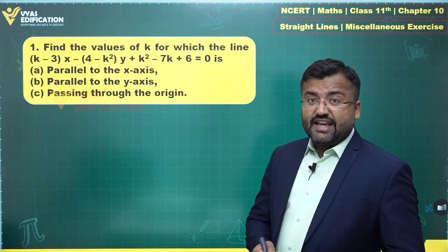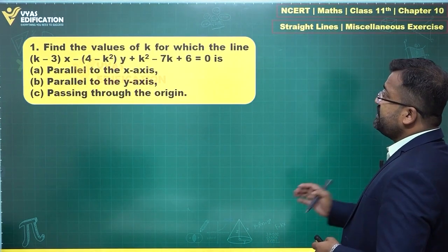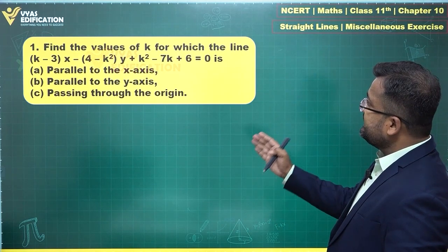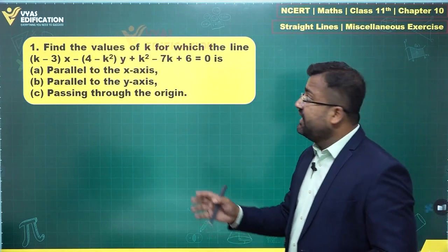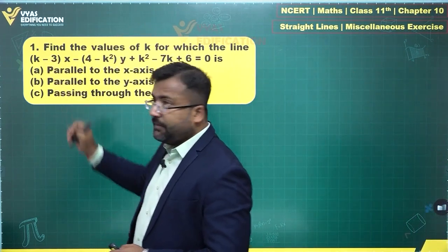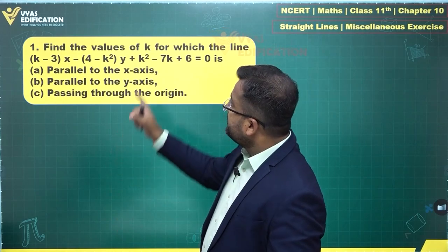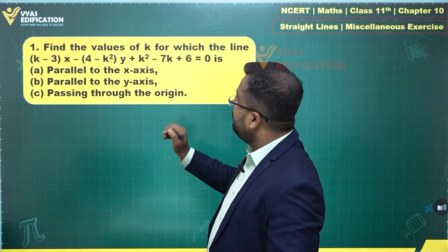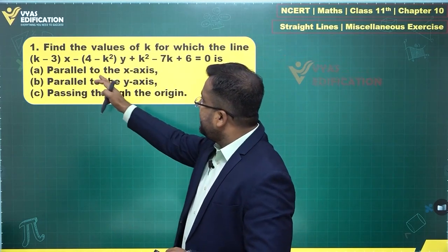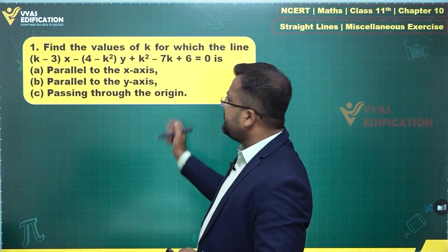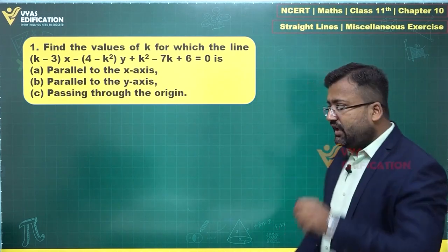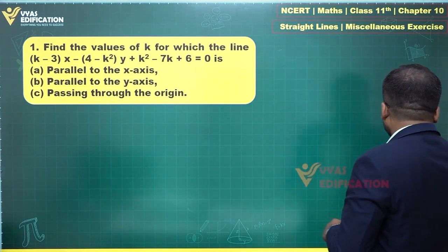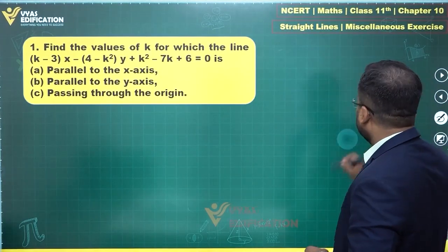The first question says: find the values of k for which the line — given in terms of a parameter k — is parallel to the x-axis, parallel to the y-axis, or passing through the origin.